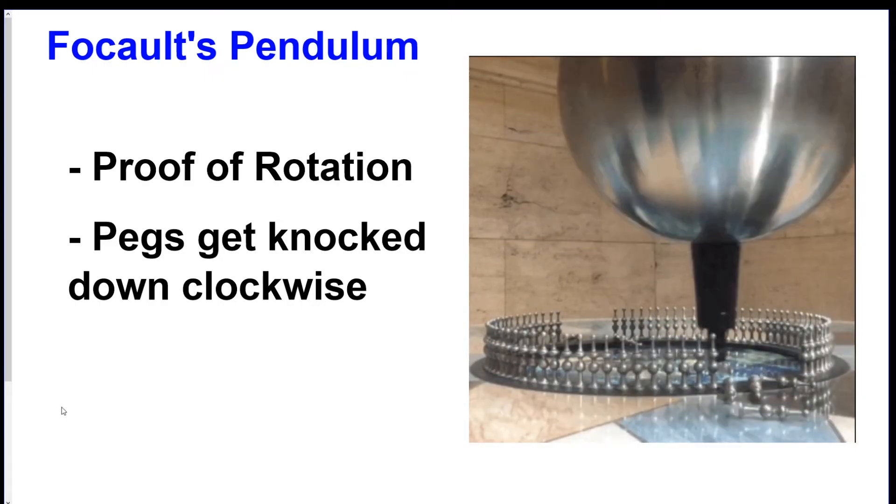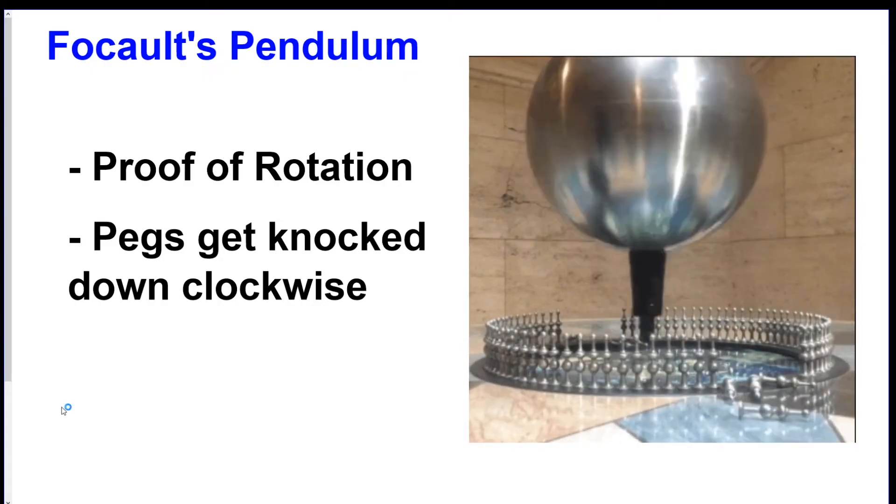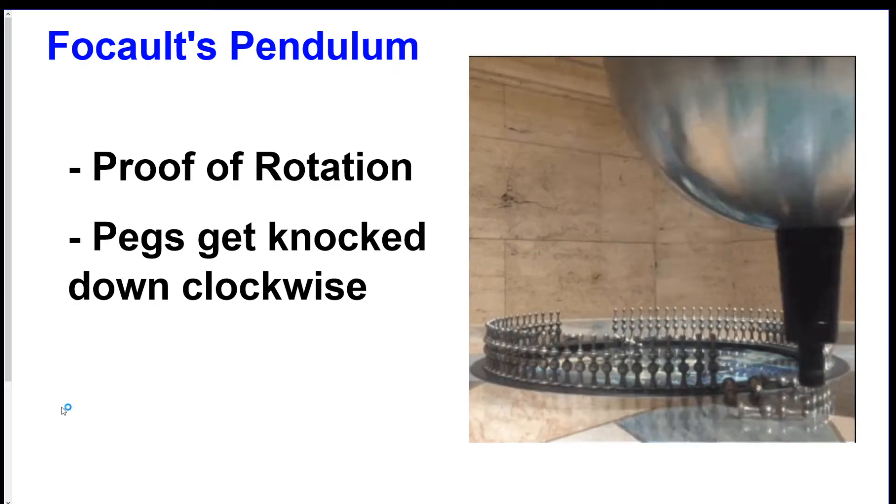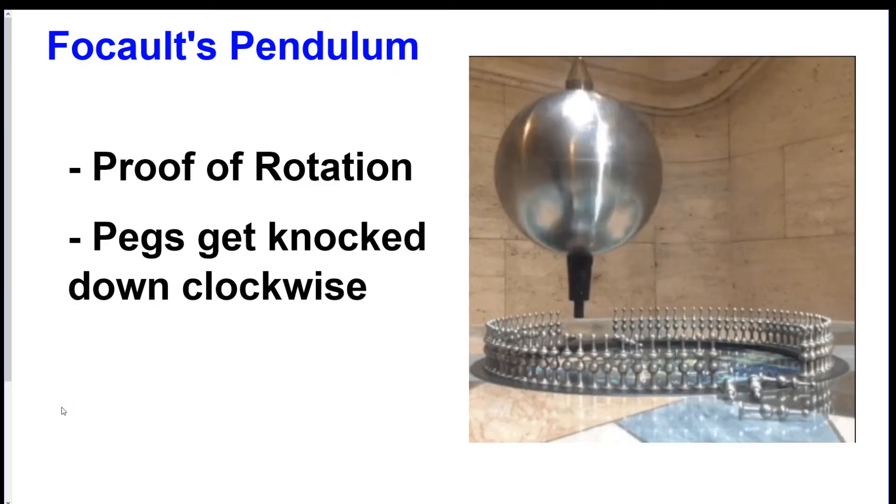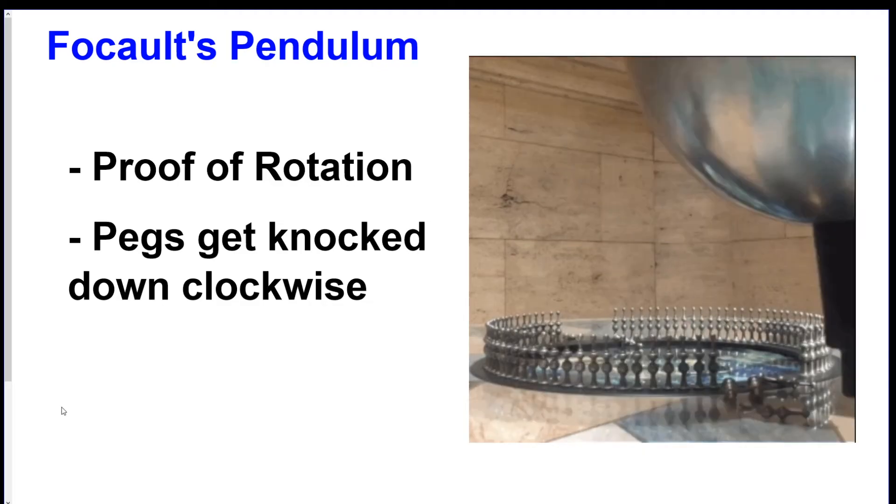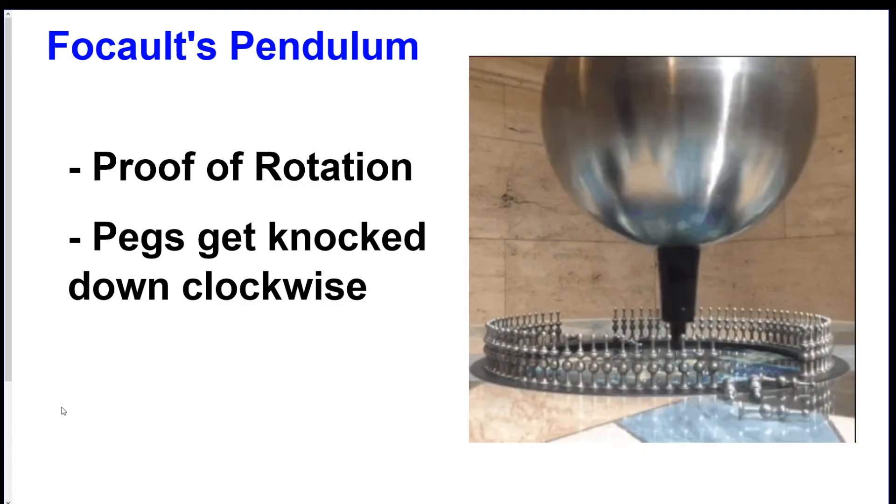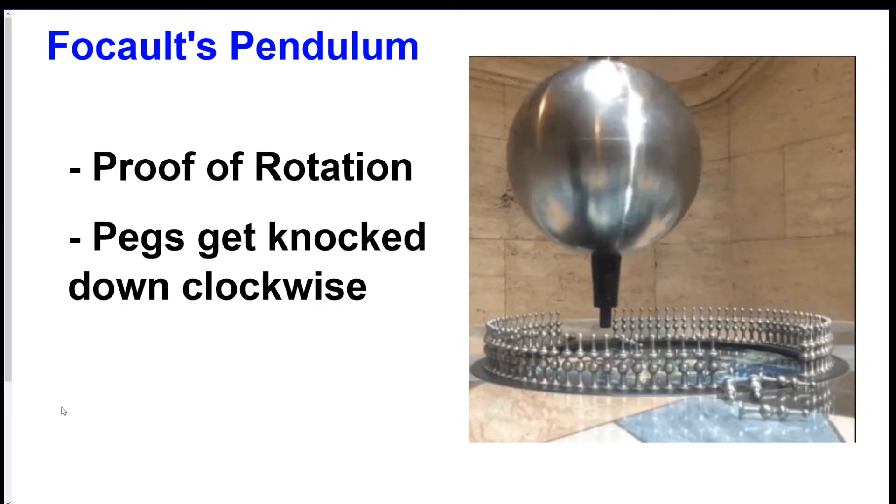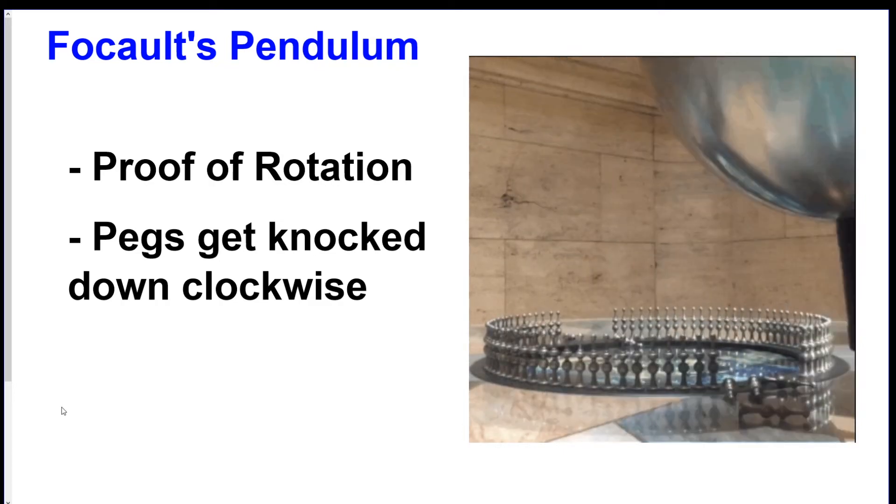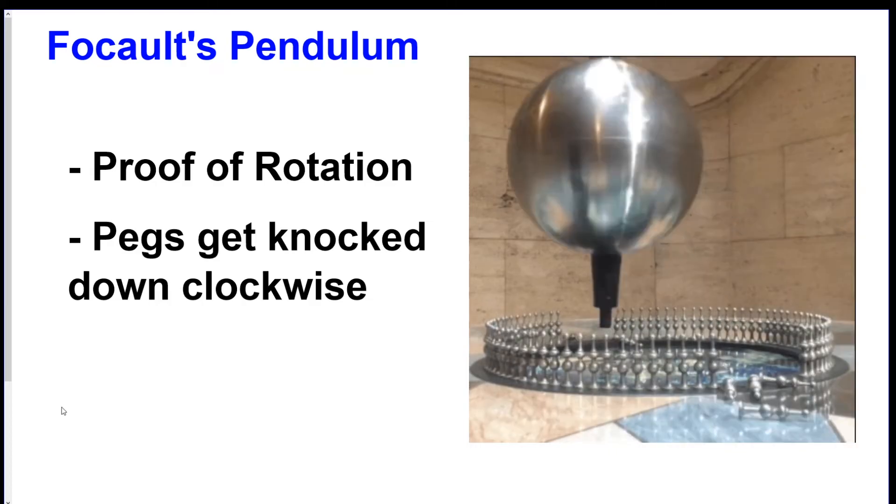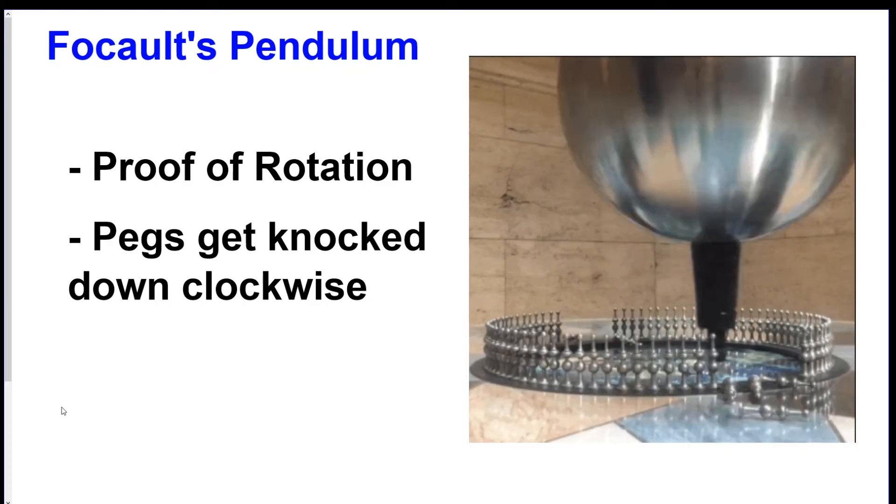The first thing I want to talk about really quick is Foucault's Pendulum. The only two main things you got to know about this is that it proves that the Earth is rotating and in examples like what you see in the picture with pegs getting knocked down throughout the process, the pegs get knocked down in a clockwise fashion because the Earth is rotating counterclockwise.